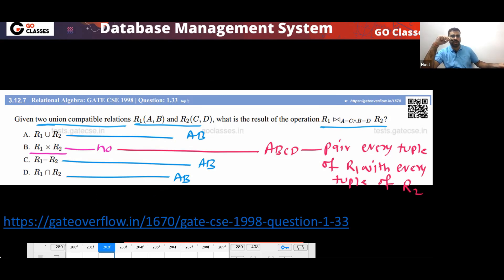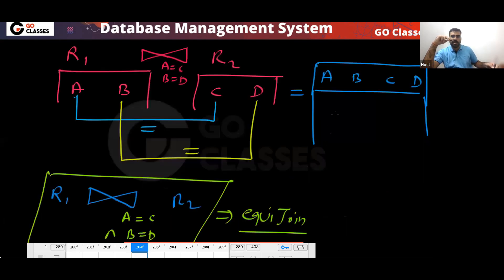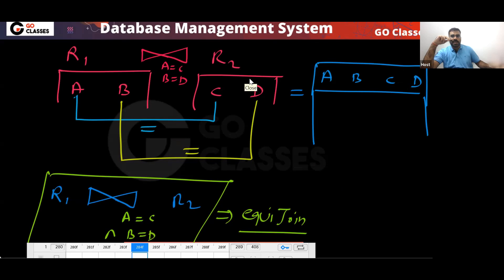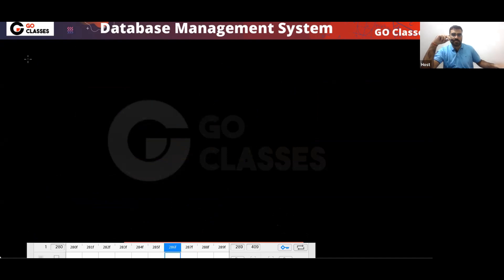Can I say none of them is the answer? The final schema will be A, B, C, D. So what is wrong with this question? There are some authors — like Raghuramakrishna — who handle equi-join differently.